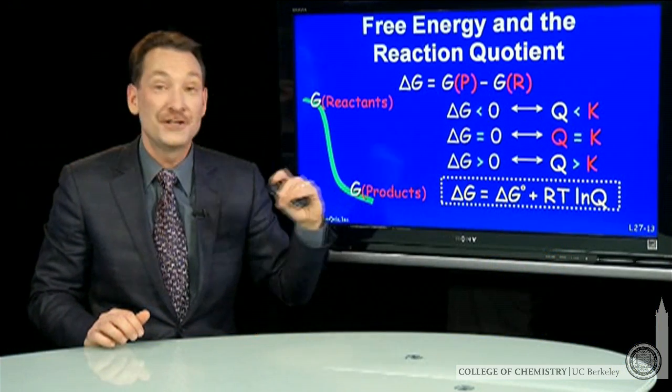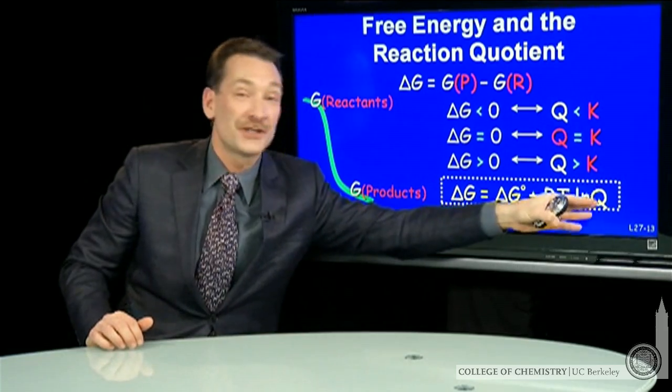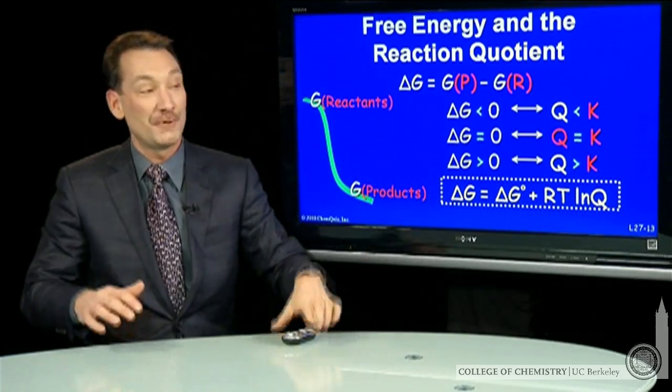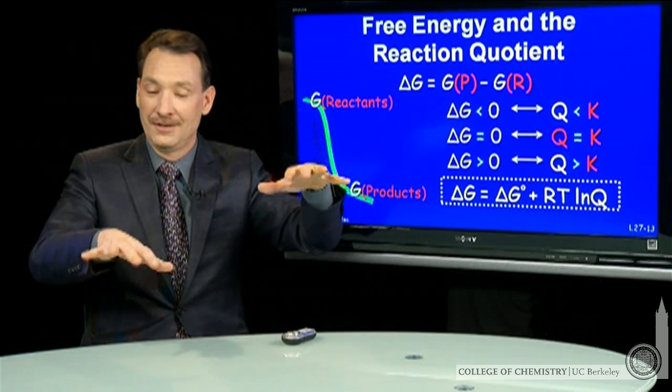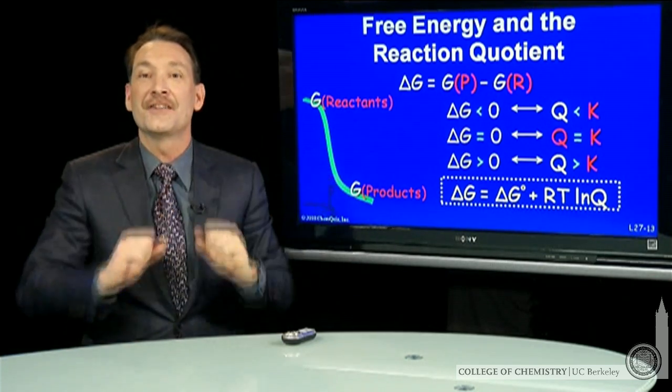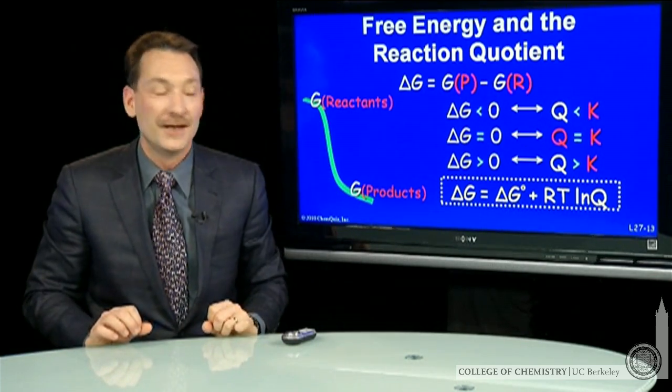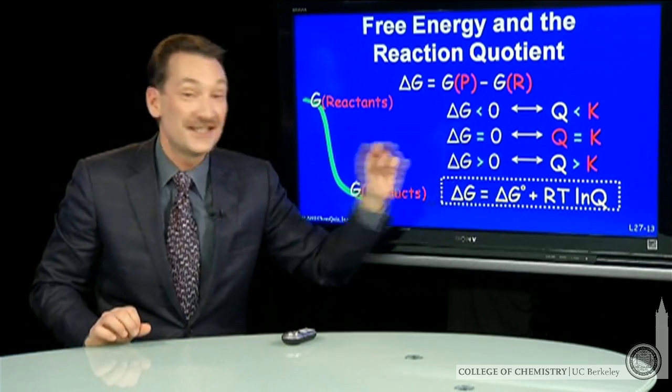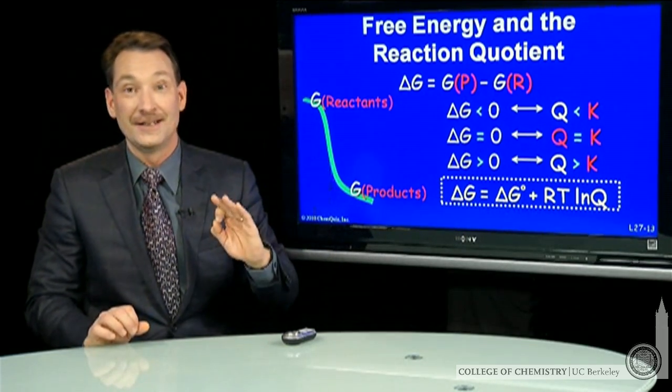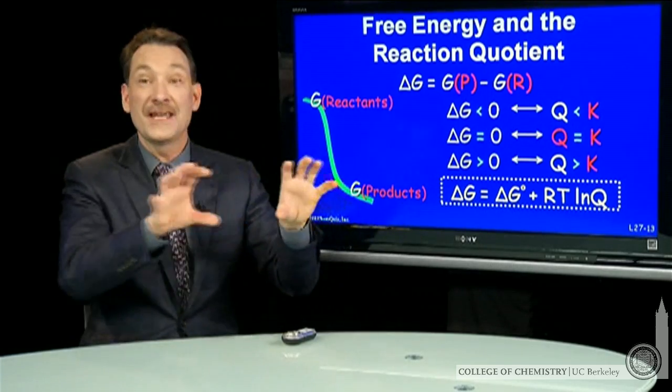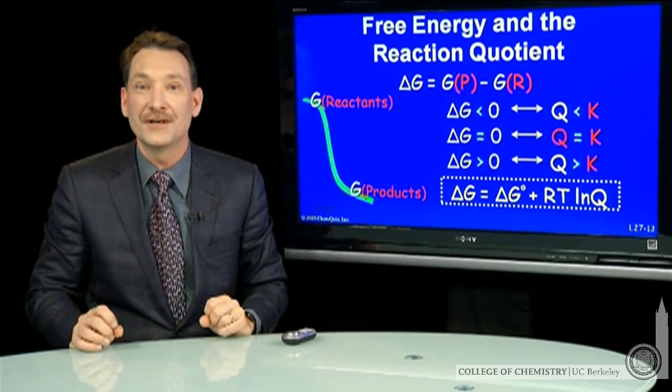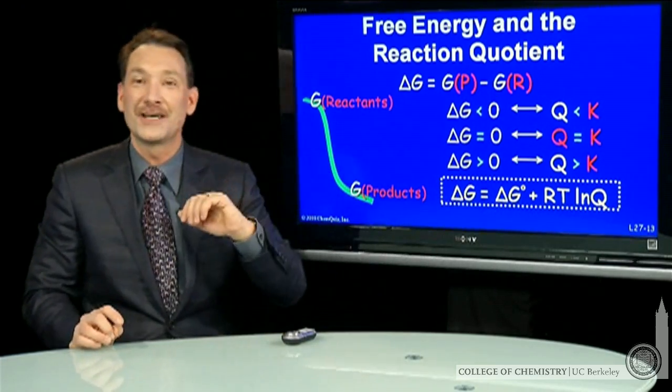The free energy of a chemical reaction is a function of the concentrations, just like we thought. As the reaction proceeds, the reactant free energies change, the product free energies change, till they come to equilibrium. Notice that delta G standard is a constant. That's the delta G difference for everything at one molar or one atmosphere of pressure. That's a constant for a given temperature.